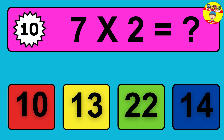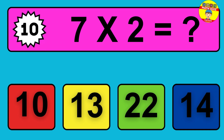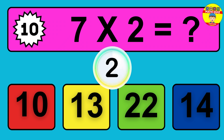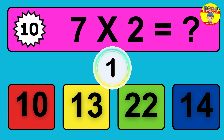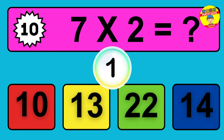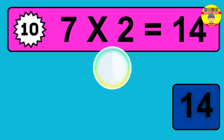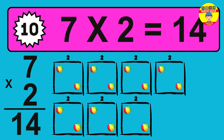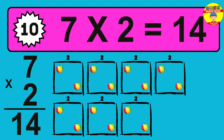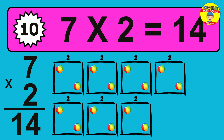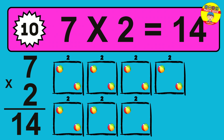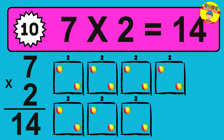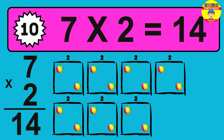Question 10. 7 times 2 equals what? So the answer is 7 times 2 is 14. To calculate, we have seven groups with two balls each one. So how many balls do we have? 14 balls.